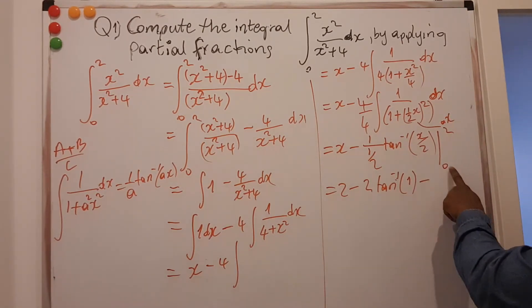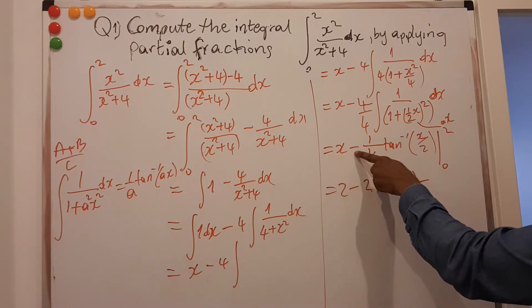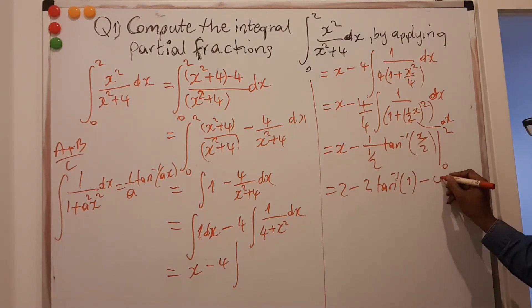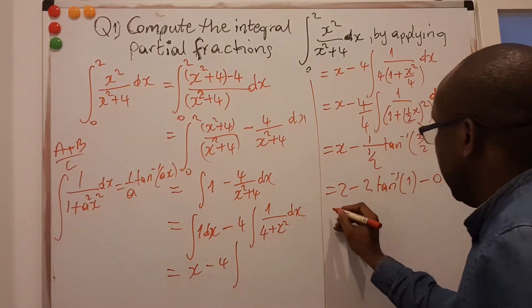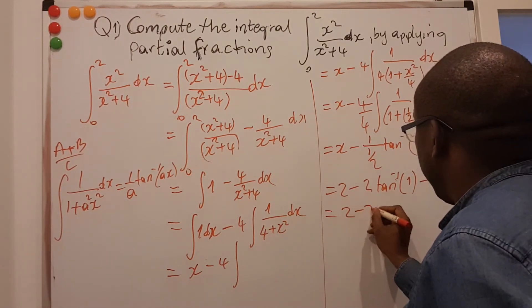Minus the lower limit. 0 here is 0. Minus this tan inverse of 0 is also 0. So this is just 0.